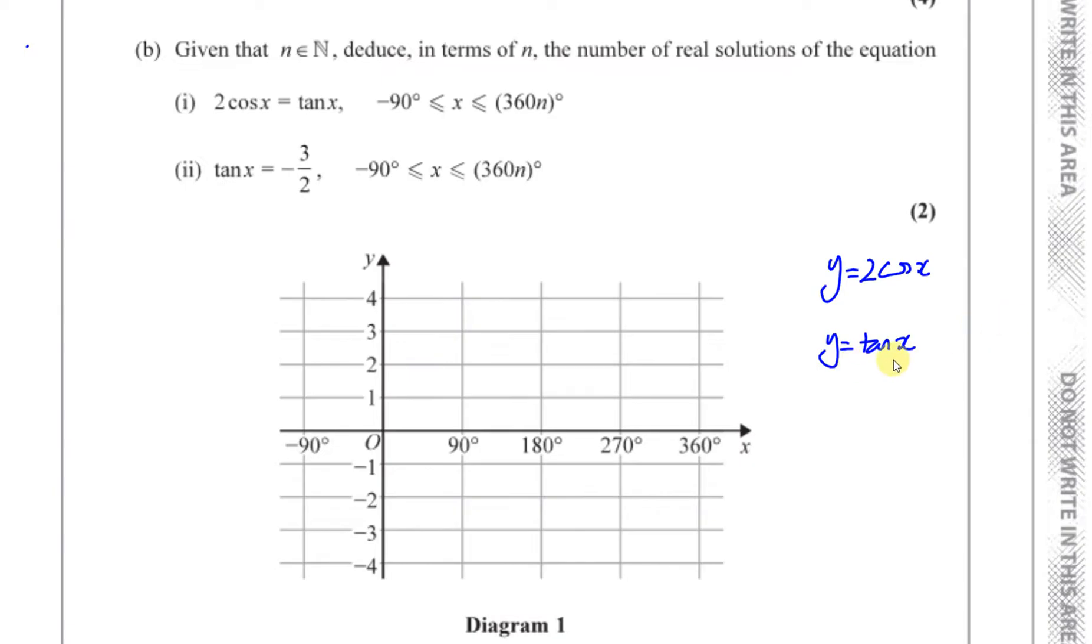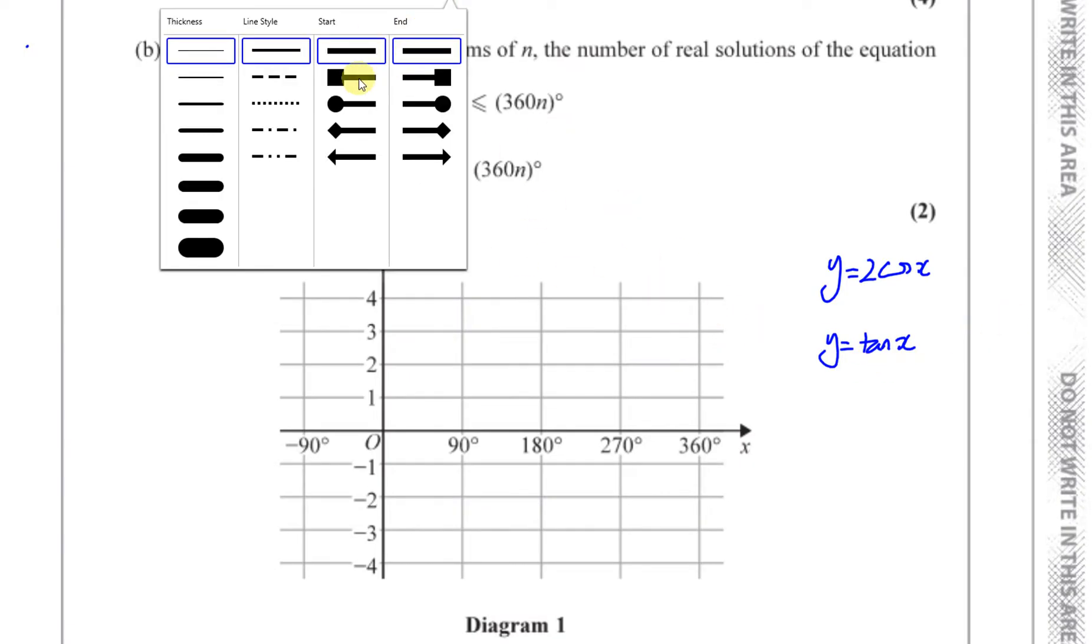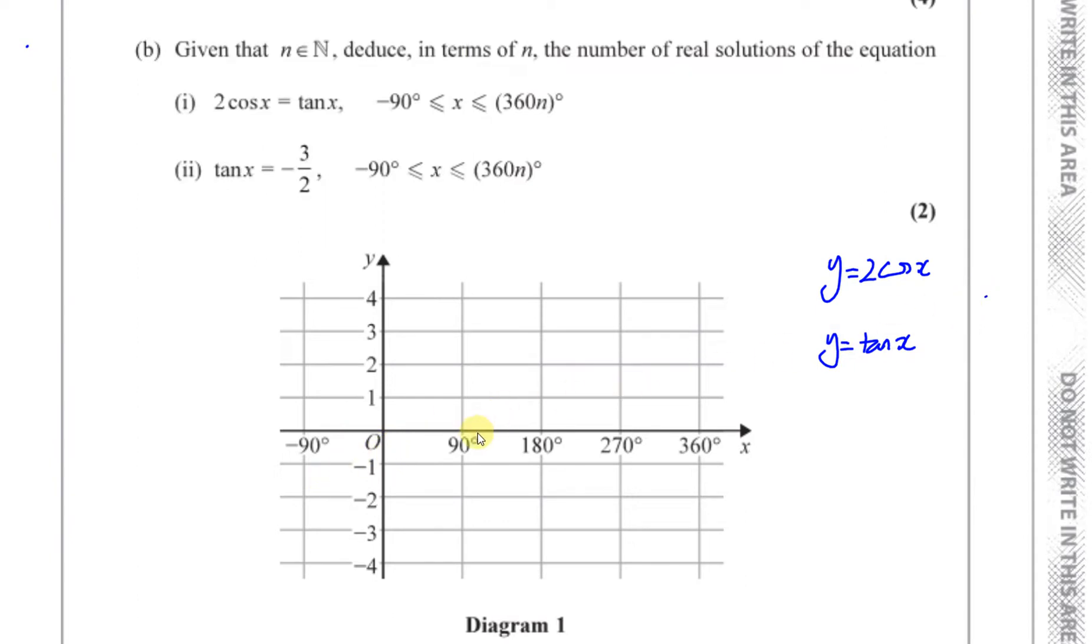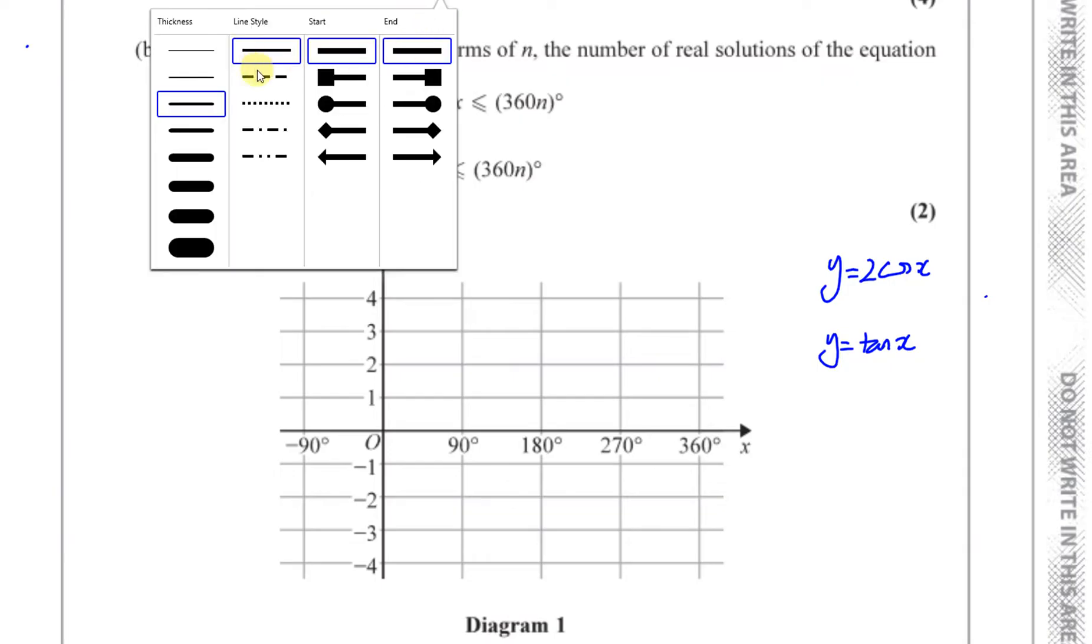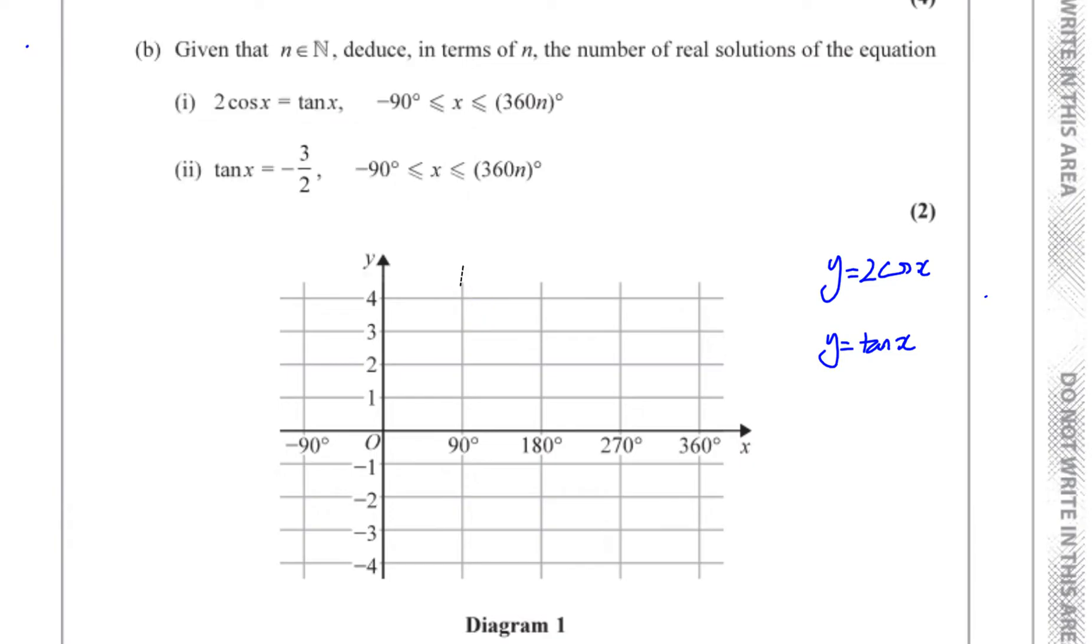Now to draw the graph. Y equals tan x, I'll do that first because there's no modifications. Y equals tan x, as we should know, is something where you have asymptotes. Tan of 90, the tangent of 90 is undefined. So I'm going to draw at 90 degrees an asymptote. The tangent curve repeats itself every 180 degrees. So that means at minus 90 there will be another asymptote, and 180 more than 90 is 270, there will be another asymptote.